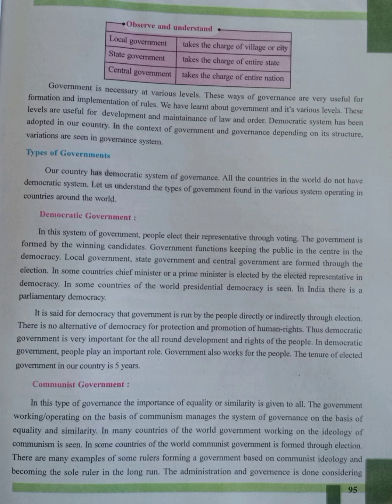In a democratic government, people elect their representatives by voting. The government is formed from the members of the majority party. A democratic government takes over the governance of the country on behalf of the people, and the final line of power is in the hands of the people. A democratic government always protects and preserves human rights, working for the all-round development and protection of rights of the people. Elections are held at fixed times, and the tenure of the elected government is usually 5 years.